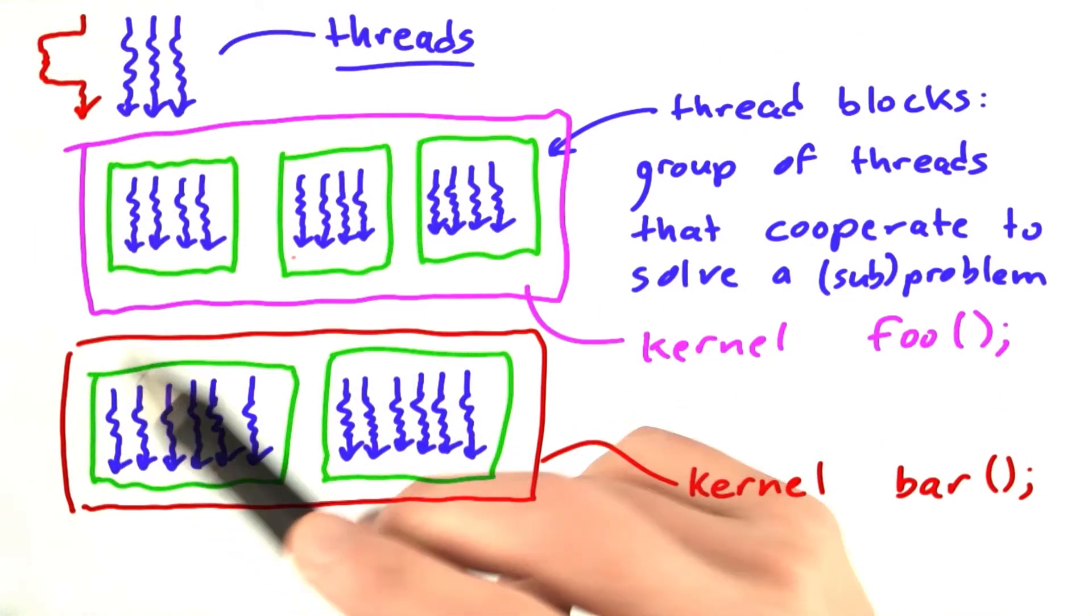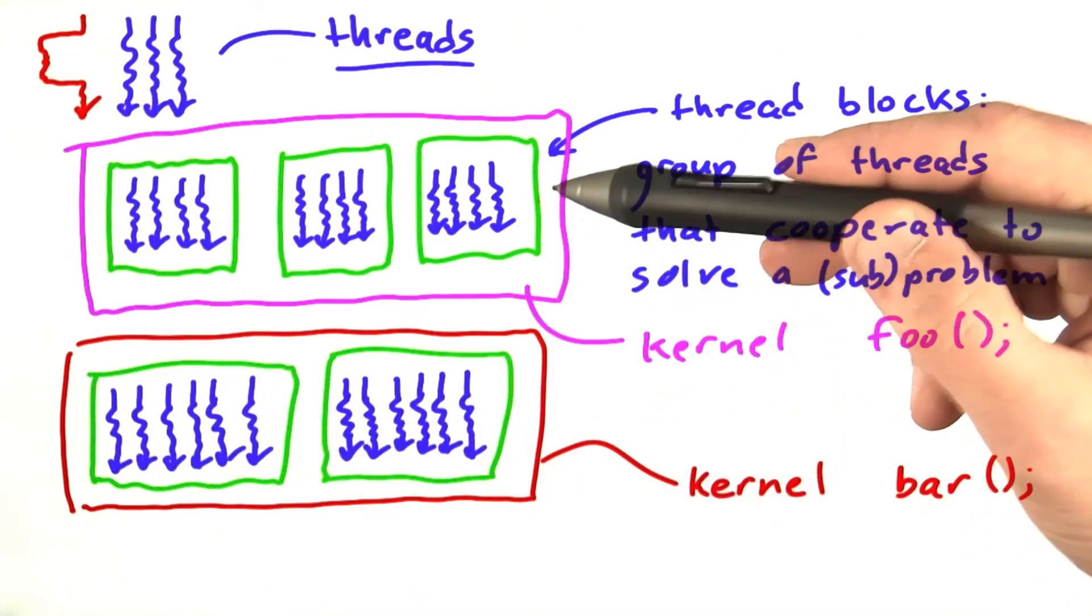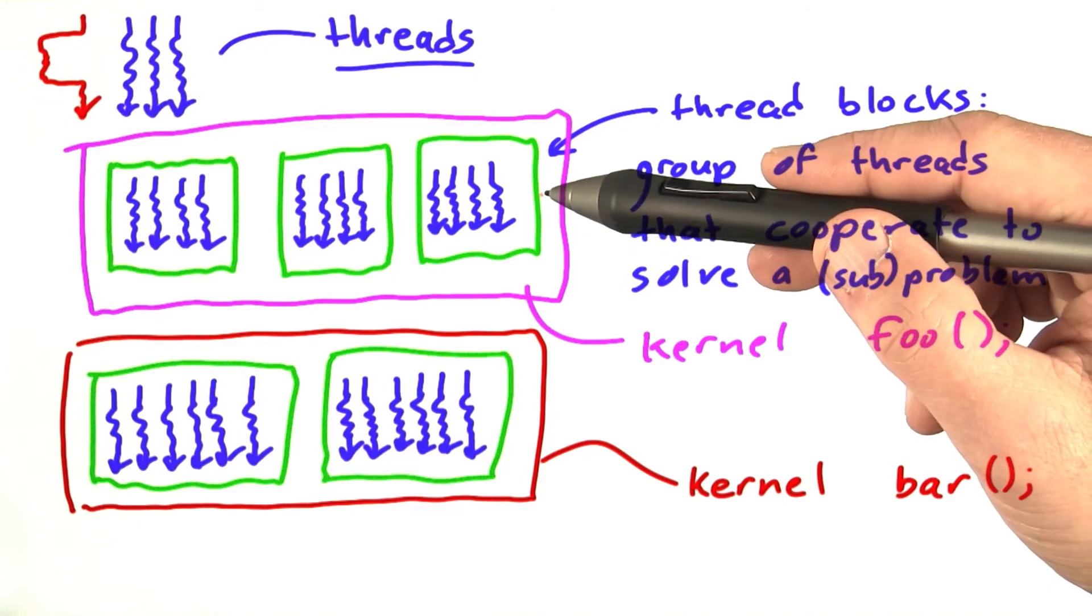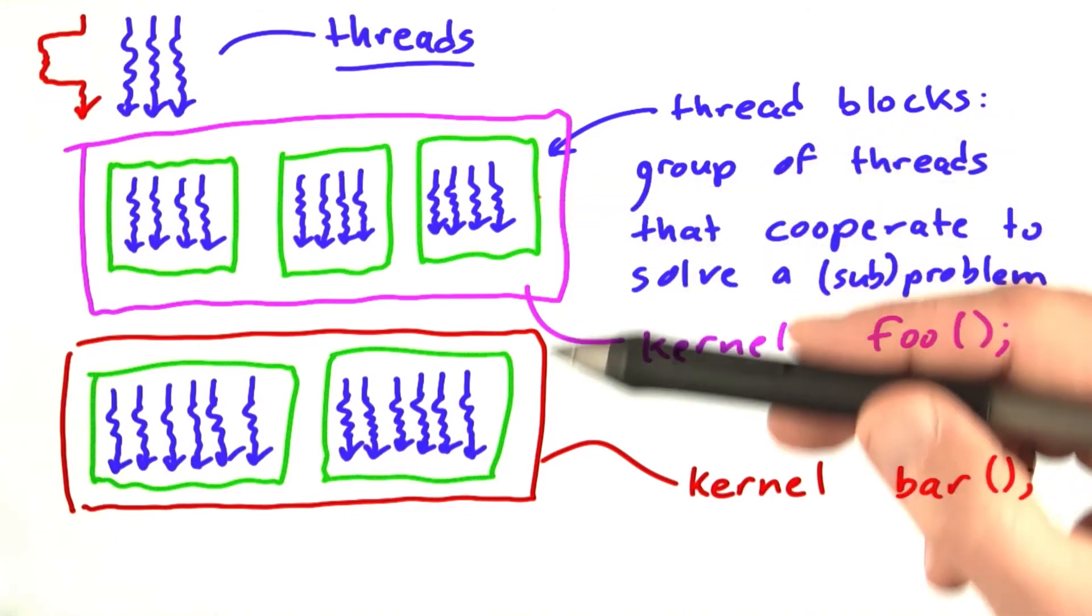A GPU program launches many threads to run one kernel, like foo, and then they all run to completion and exit. And the program launches many threads to run the next kernel, like bar.